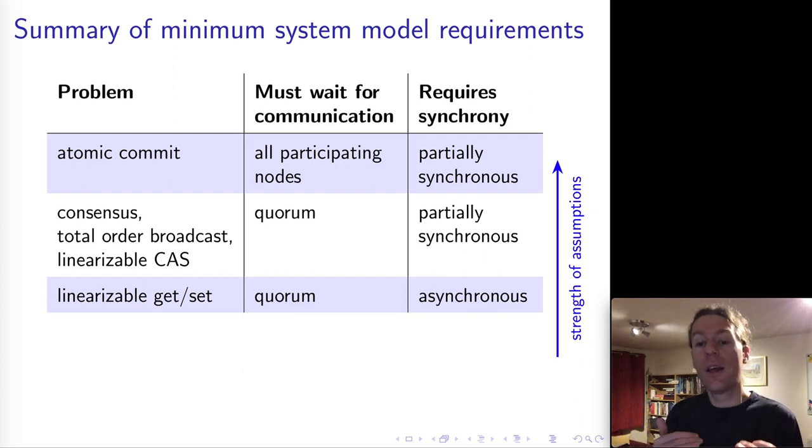Moving down in the list, interestingly, a linearizable get and set operation has weaker assumptions than a linearizable compare and swap operation. Because for get and set, we can just use the approach we saw earlier, the ABD algorithm, which means quorum writes and quorum reads with read repair. This still requires communicating with a quorum of nodes. But notice that in this algorithm, there are no timers, no timeouts, no failure detection. The algorithm is completely asynchronous. It doesn't require clocks at all. This means that linearizable get and set has weaker assumptions about the system model than compare and swap.